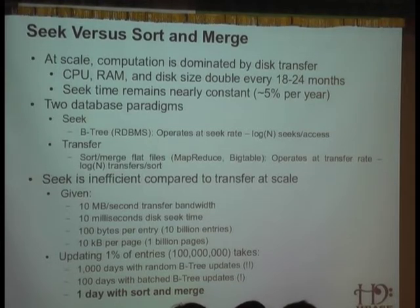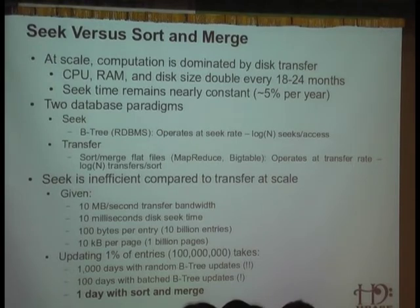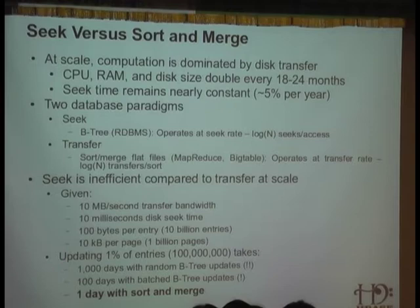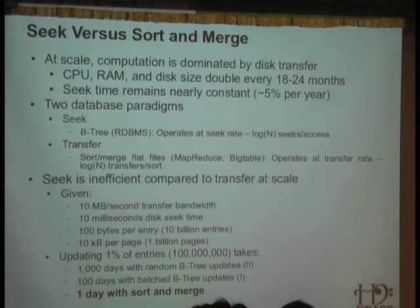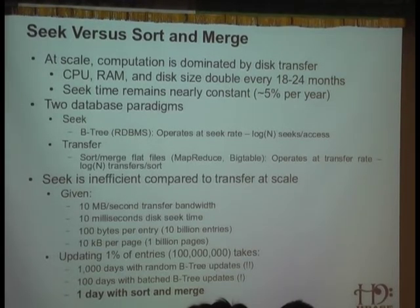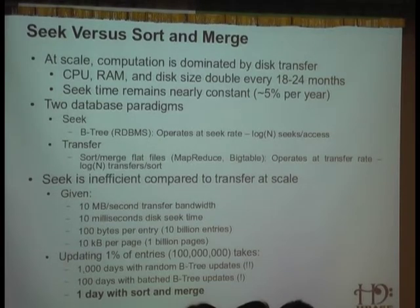There are two database paradigms. There's the seek paradigm, which most relational databases use — updates and accesses use B-trees to seek around the disk, find a location where to store the data, and then store it. Another model, used by BigTable and MapReduce where flat files are used, is a transfer model where rather than search and replace, the entire database is rewritten. And it actually turns out that at very large scale, it is more efficient to completely rewrite the database than it is to seek and replace.